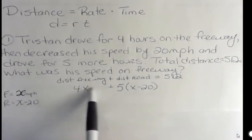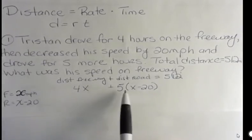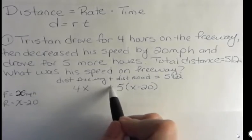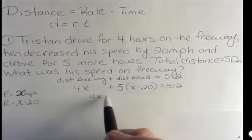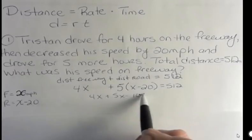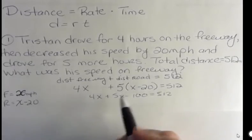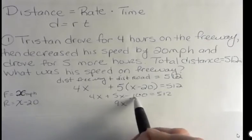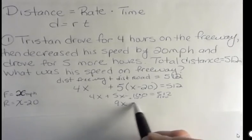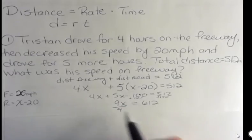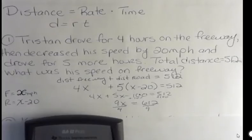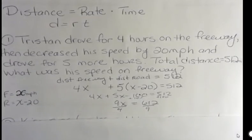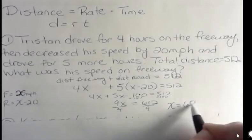This is the distance of the freeway driving, 4 times X. This is the distance of the dirt road driving. And if we add those together, that equals 512. If I distribute that, I get 5X minus 100. 5X and 4X is 9X, and I'm going to add 100 to both sides. And I get 612. Then I'm going to divide both sides by 9, and 612 divided by 9 is 68.